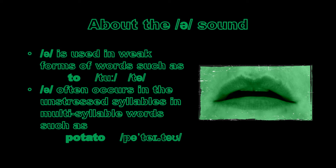If you look at the example word 'potato', we can see that the stress is on the 'tae', and we have the 'uh' at the beginning of the word — 'puh-potato' — to create that weaker syllable so that the 'tae' can be stronger. You'll notice that the word is actually spelt with an 'o', but we use the schwa sound. It's really important to notice that in English the schwa is not associated with any one particular spelling — it can be spelled in many ways.